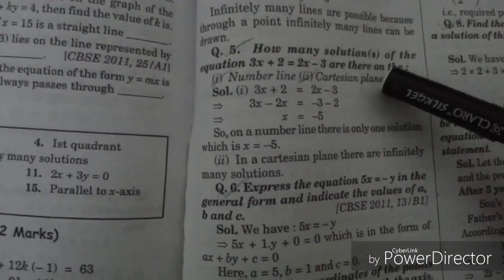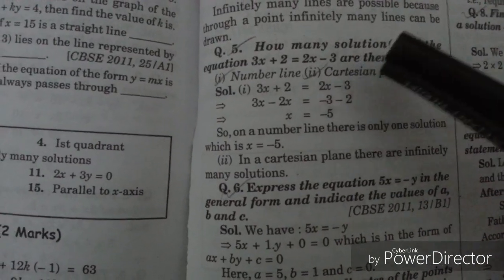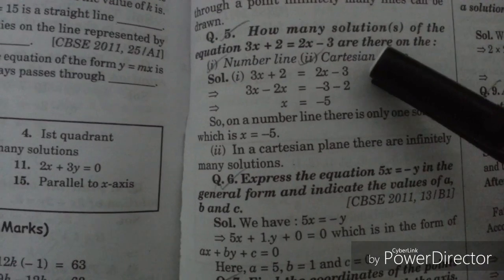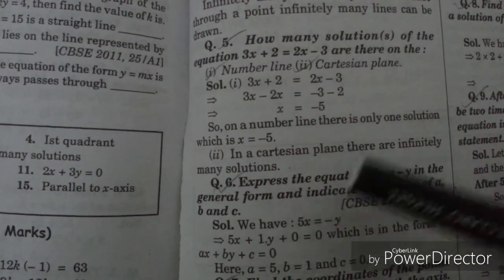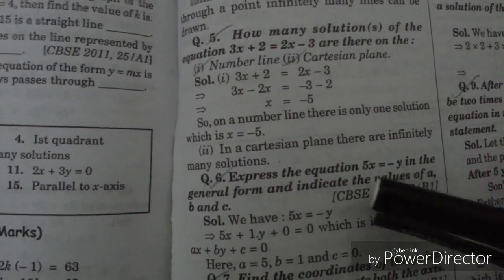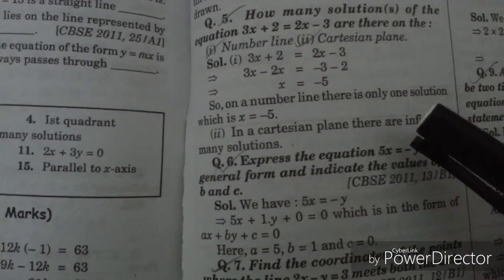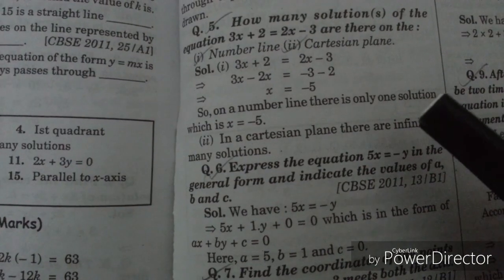Now if you see this fifth question. It has been asked how many solutions of equation this are there on the number line cartesian plane. So on the number line you can find, in the cartesian plane it will have infinitely many solutions. So this is another important thing which can be asked in one mark.